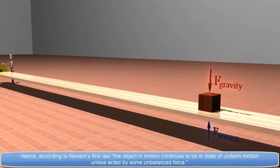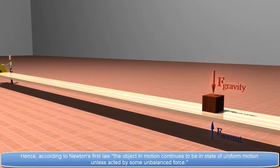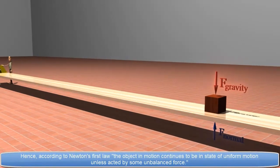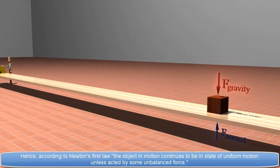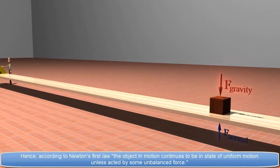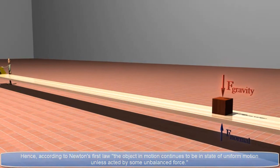Hence, according to Newton's first law, the object in motion continues to be in state of uniform motion unless acted by some unbalanced force.